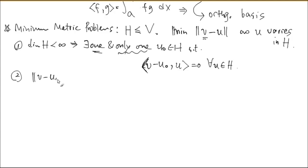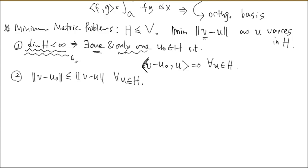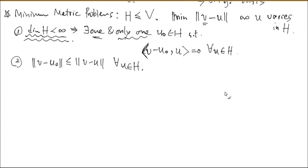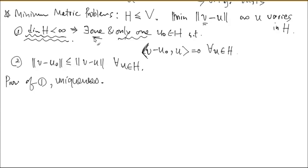The statement is that ||V - U₀|| is as small as possible compared to ||V - U|| for any U in H — that's the minimum. We want to understand this not only for R³ but in general. Here is the proof of uniqueness. We need to show there is only one such U₀, which is obvious in three dimensions but must be proved rigorously.